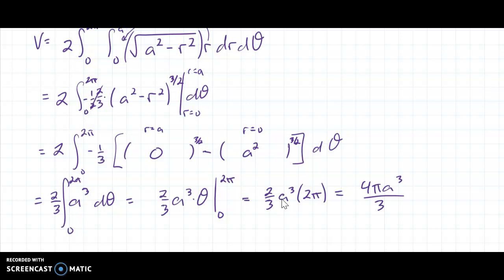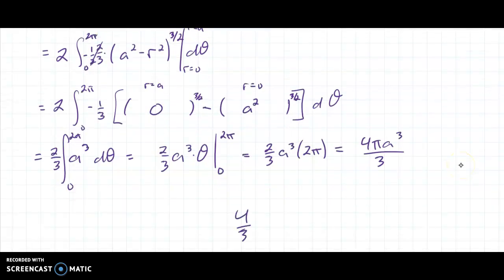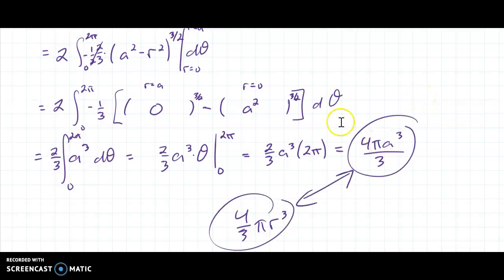Or you should know the formula from before. We write 4 thirds π r cubed. But here we're doing r equals A. So this matches the formula that we know, and that is where it comes from.